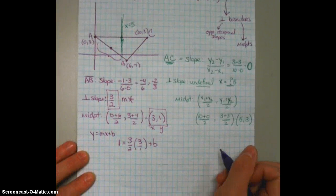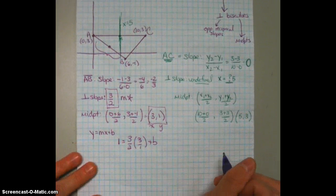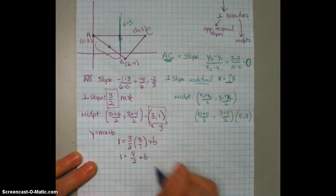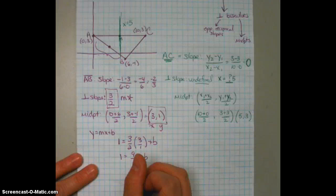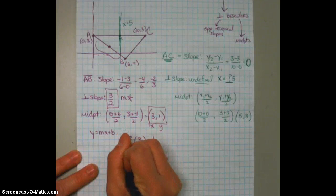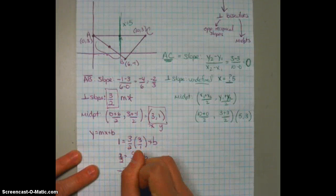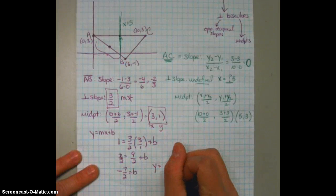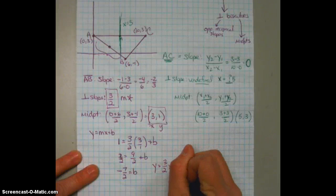Move up a little bit here. Okay. So multiplying out, we get 1 equals 9 halves plus b. Subtract 9 halves. So 9 halves is 4 and a half. So this is what? Negative 7 halves equals b. So the equation of this line is y equals 3 halves x minus 7 halves.